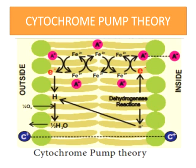According to the cytochrome pump theory, dehydrogenase reactions on the inner side of the membrane produce electrons and protons. The electrons then move towards the outside via a cytochrome chain, which finally reduces the terminal cytochrome. The metal iron plays an important role in this mechanism. The reduced cytochrome of the outer surface is oxidized by oxygen, causing a release of electrons which then combines with H+ ions and oxygen to produce water.